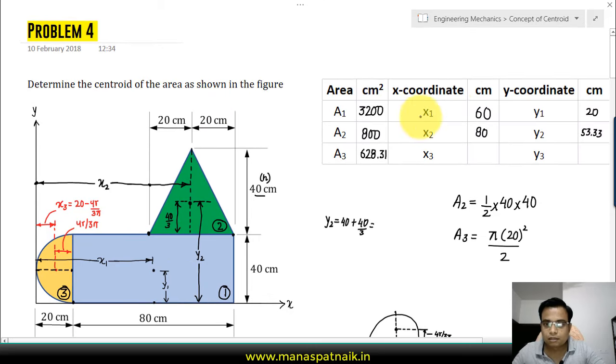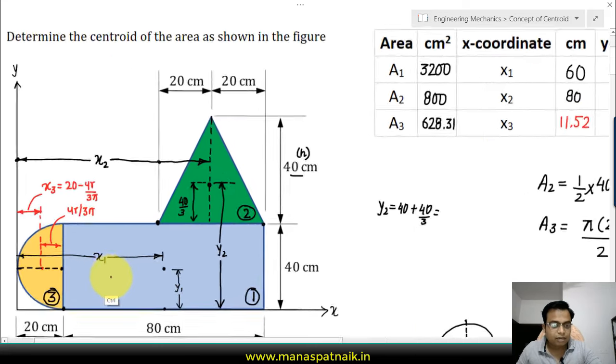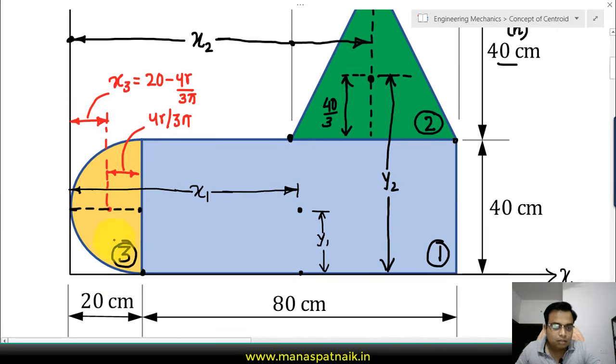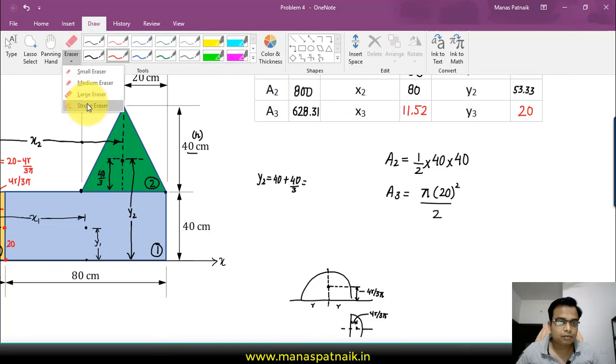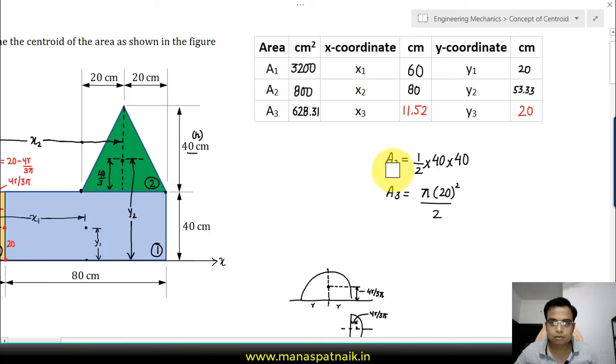Finally, what's left is the value of y3. This is the centroid, c3, and this is y3. Y3 is pretty simple—from here to here that's 20. So the value of y3 is 20. Let me check all of this: 20, 53.33, and 20; and this is 60, 80, 11.52. Areas are 3200, 800, 628.31. Okay.